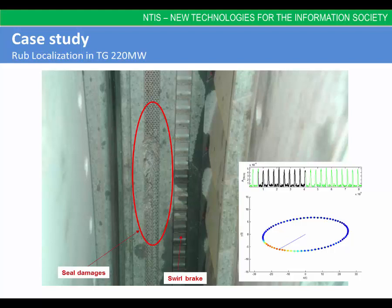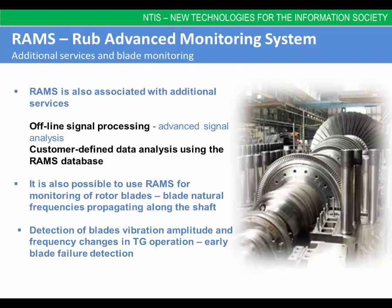The identified circumferential angles were also confirmed by the turbine inspection in the summer of 2012. The RAMS system is also associated with additional services related to vibration diagnostics based on advanced signal processing and analysis. The RAMS also allows performing customer-defined data analysis. The recently developed module for RAMS enables monitoring of rotor blades — blade natural frequencies propagating along the shaft are monitored through the existing shaft proximity sensors. The new module detects blade vibration amplitude and frequency changes in turbo-generator operation, with the aim of detecting the initial phase of rotor blade failure.